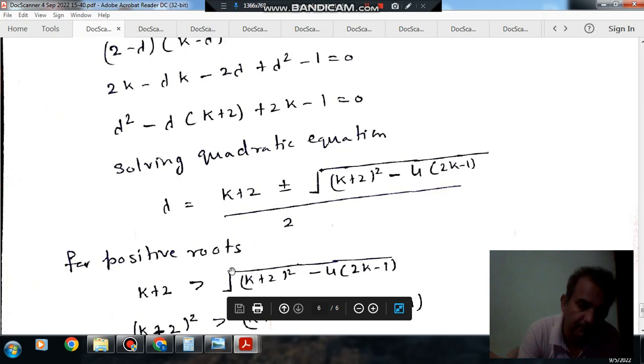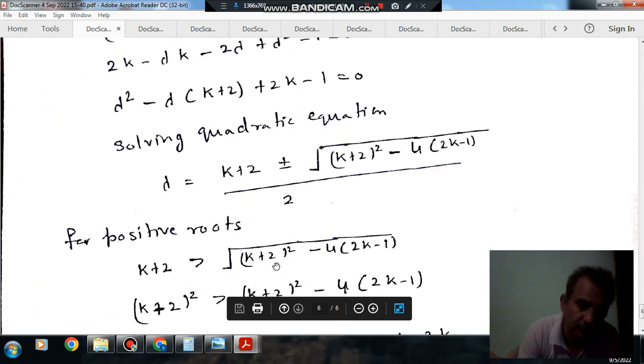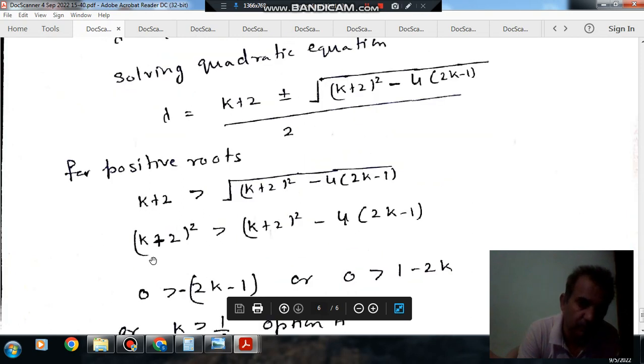K + 2 should be greater than sqrt((K + 2)^2 - 4(2K - 1)).